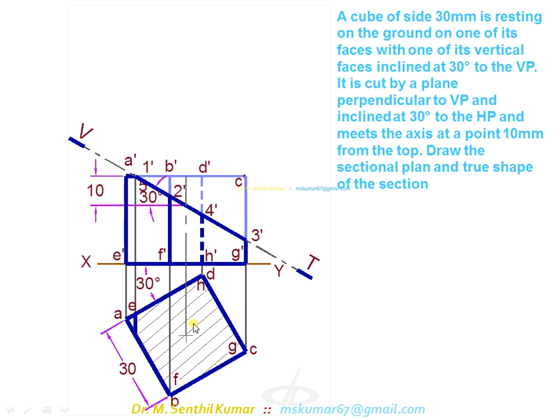So apparent section or the sectional top view is over. Now we see the true shape of the section. So somewhere here parallel to this line, you have to draw one new reference line X1, Y1.